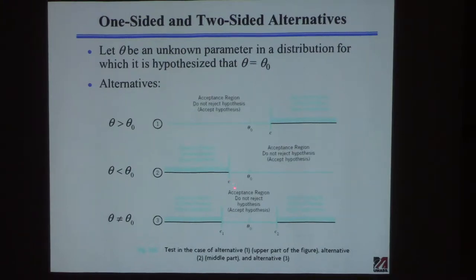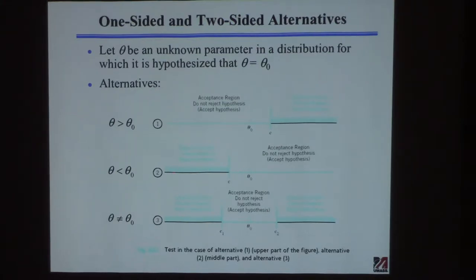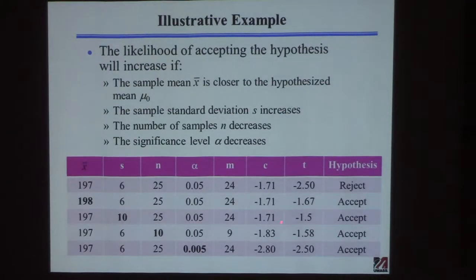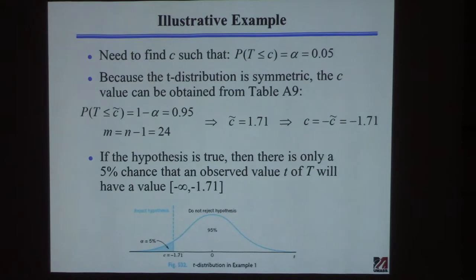The value depends on several things. It depends on the variance and the mean of the samples. It depends on the significance level alpha you choose. I showed you in that table how the C value might move around a little bit as a function of different things. The C value would be a function of the number of samples and the significance level — that'll move this value around.